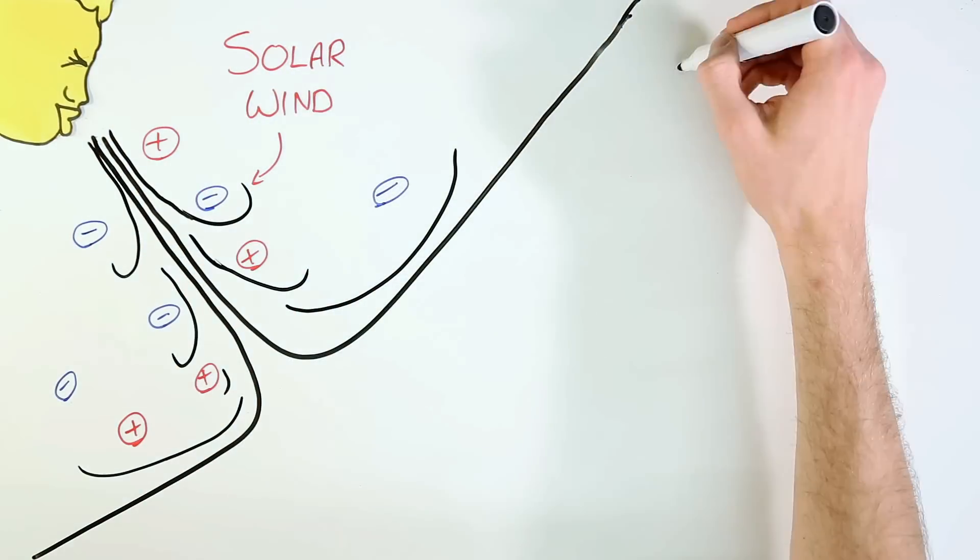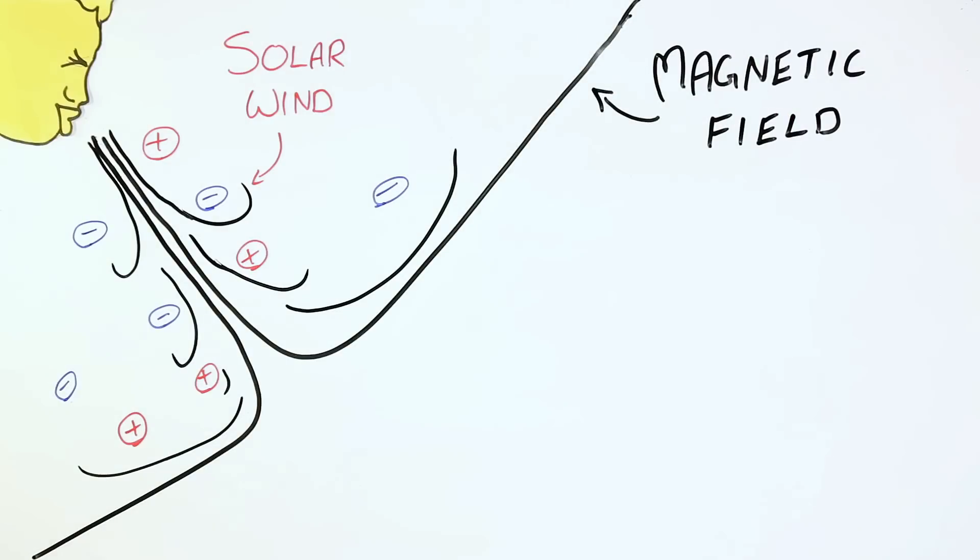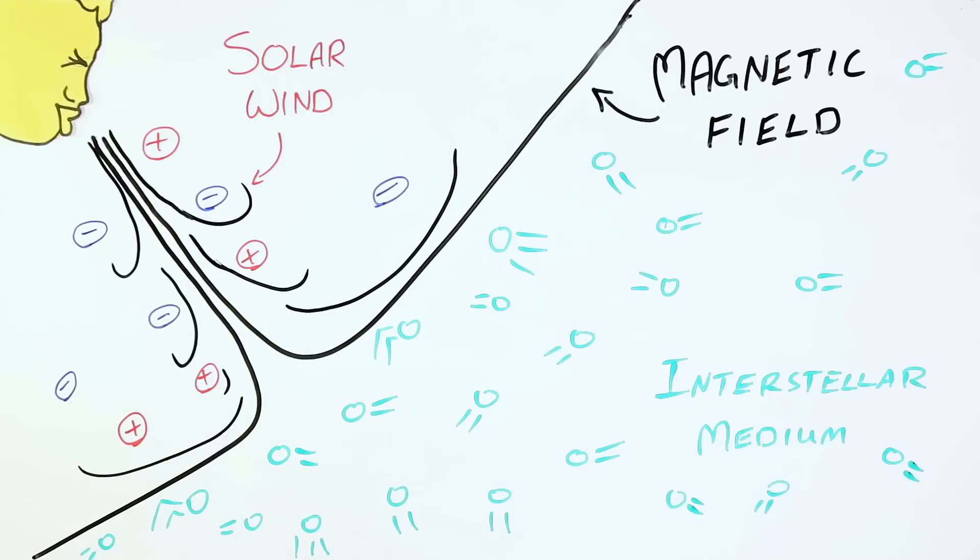The pressure of the solar wind and magnetic field prevent particles from elsewhere in the galaxy, called interstellar medium, from entering the solar system.